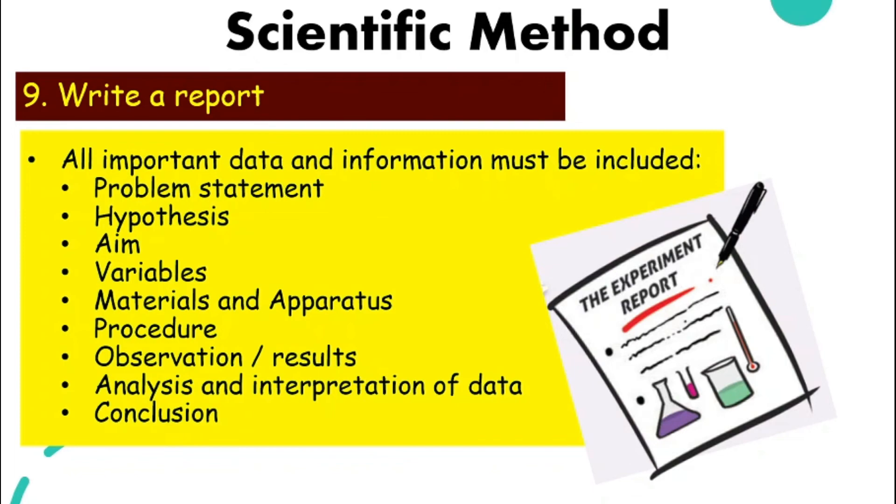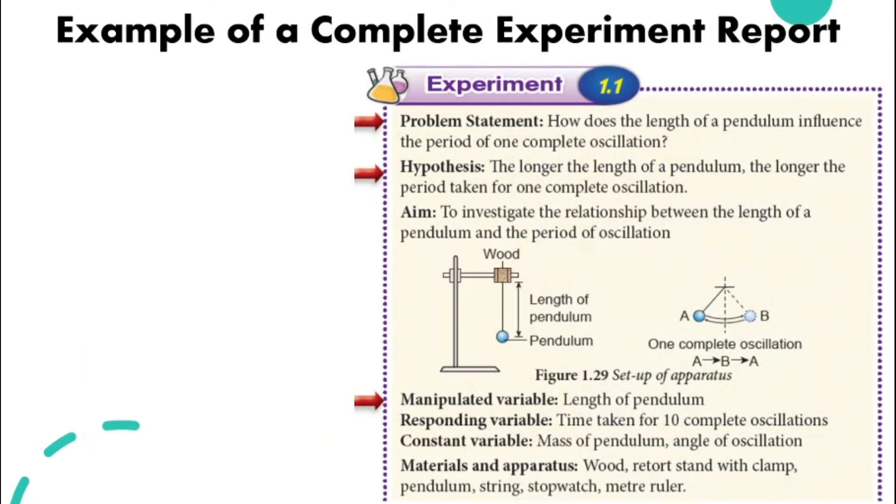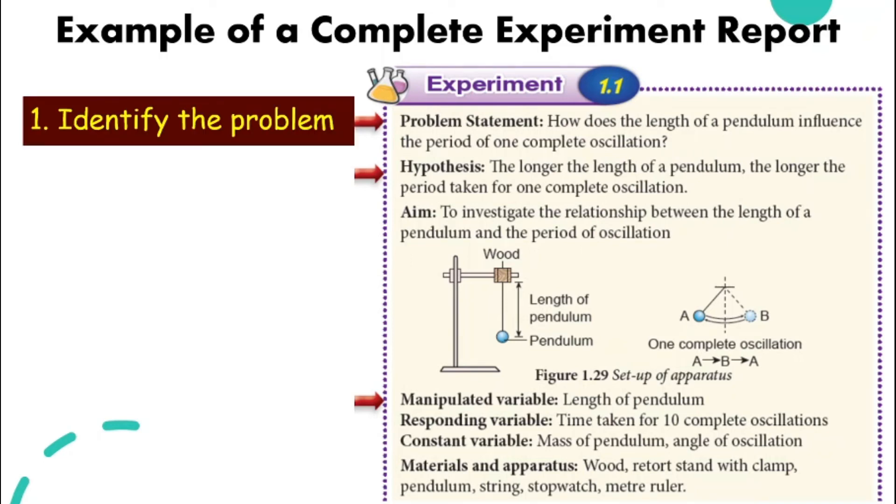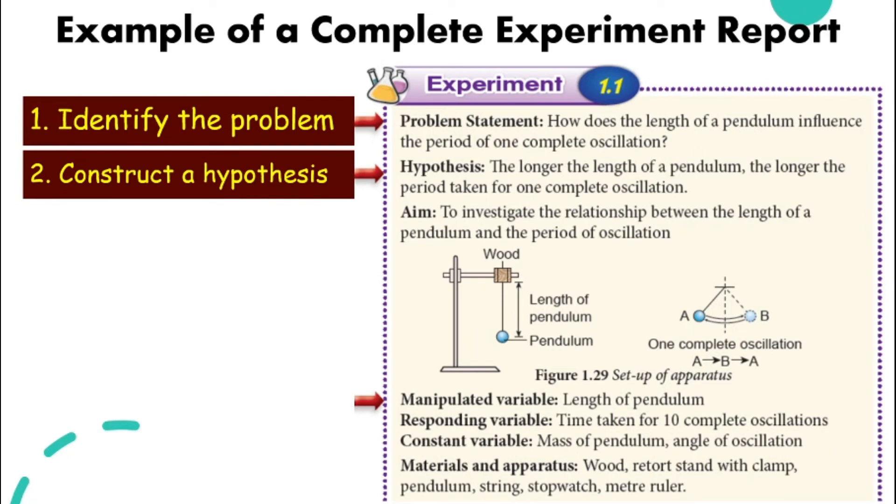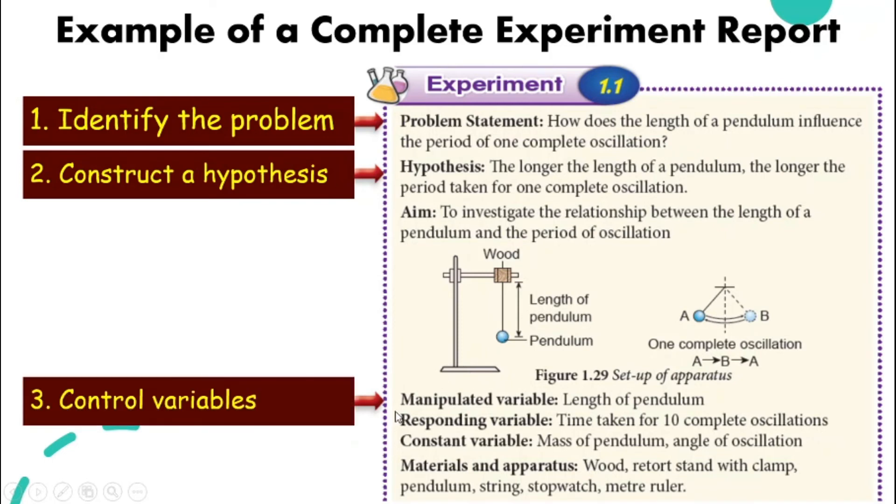Let's take a look at an example of a complete science experiment report. Following the scientific method, we have different steps. The first step, identifying the problem, here is our problem statement, followed by our hypothesis. When we construct our hypothesis, don't forget to write your aim and include your diagram if there is one. Then we control variables, where we list down all three different types of variables. And we have materials and apparatus.